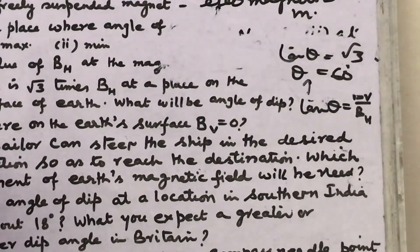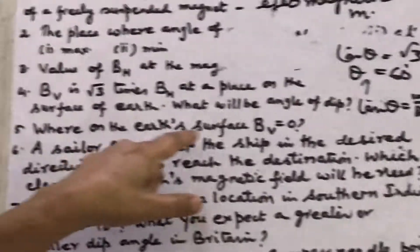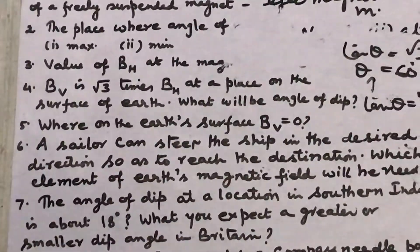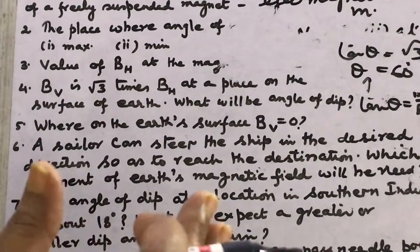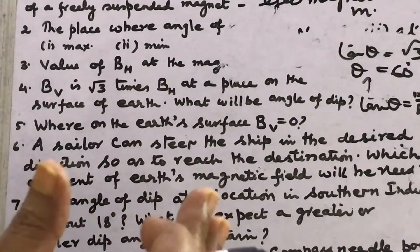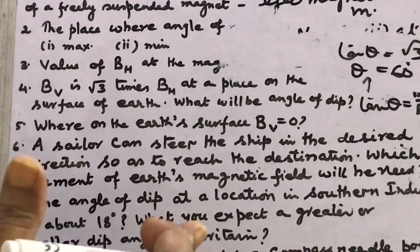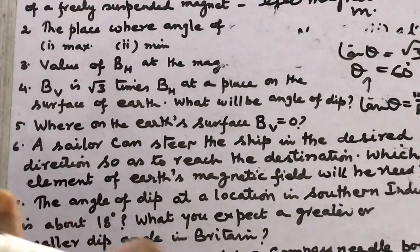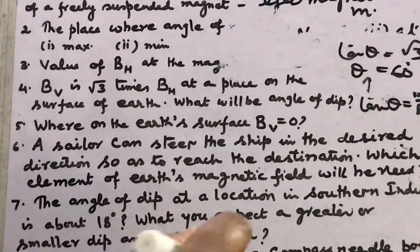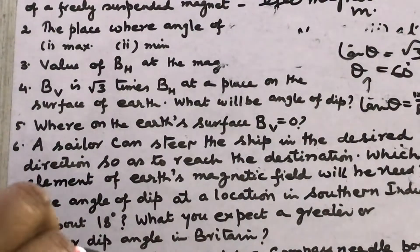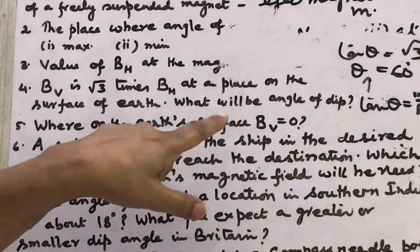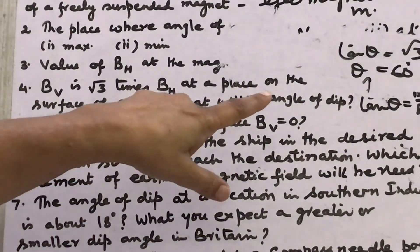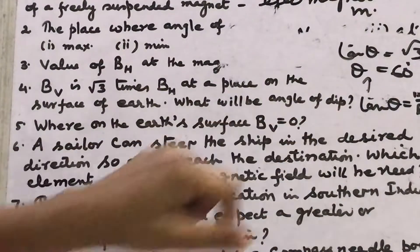Fifth question: where on the earth's surface is BV, the vertical component of Earth's magnetic field, equal to 0? The vertical component is 0 where the dip needle is totally horizontal. That point is the magnetic equator. So at the magnetic equator, BV equals 0.